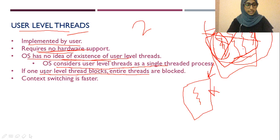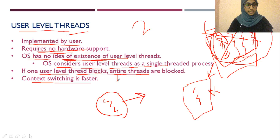An advantage of user-level threads is that context switching is faster. Because the kernel doesn't track much information about user-level threads, the context is smaller. When a thread is being executed and another thread comes in, the switch happens faster since there is less data to save and restore.